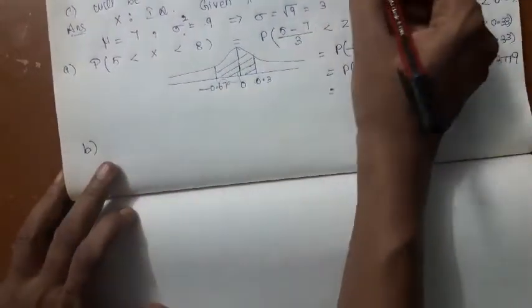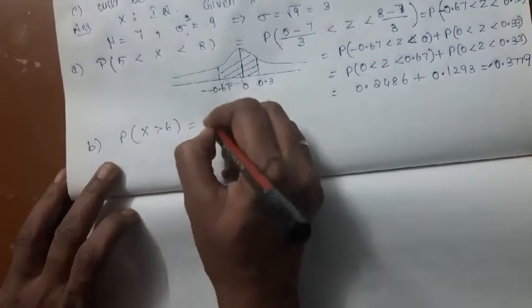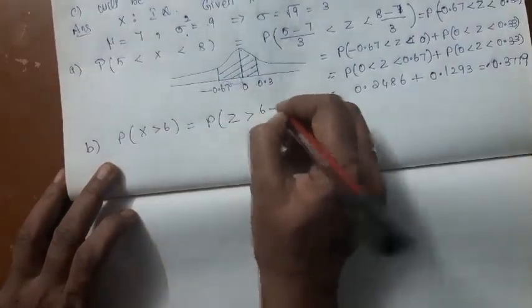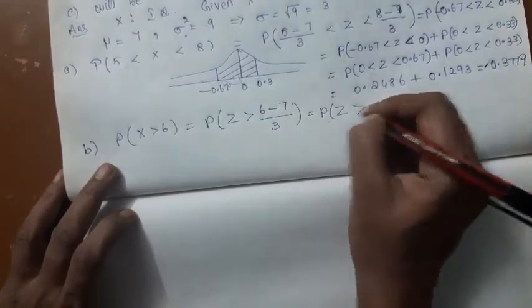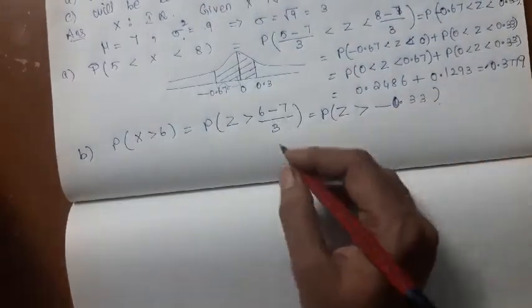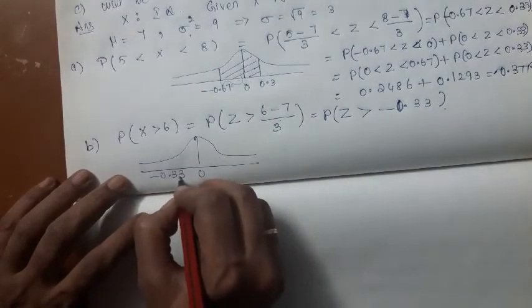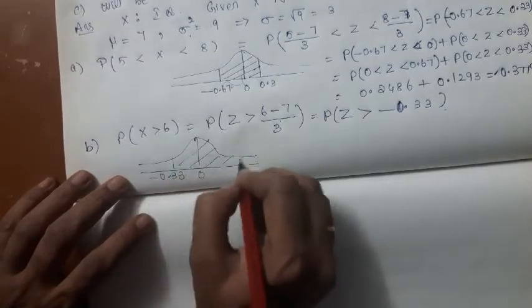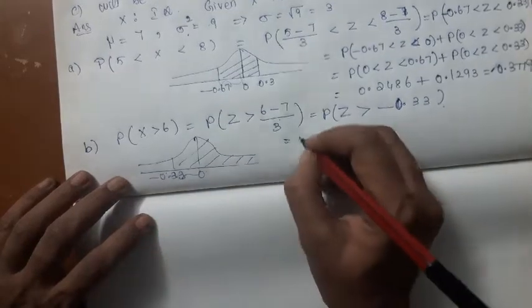Now let us come to the next question. B. It says, what is the chance that the IQ of a student is greater than 6? So you should standardize: 6 minus 7 divided by 3. You get Z is greater than minus 0.33. Minus 0.33 is here. So you need this area. To find this area, you don't know what is this area from here to here.